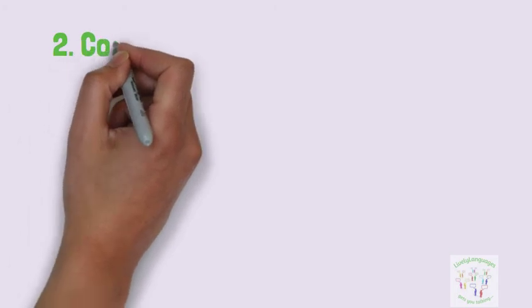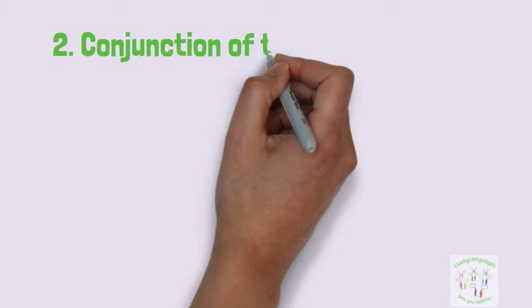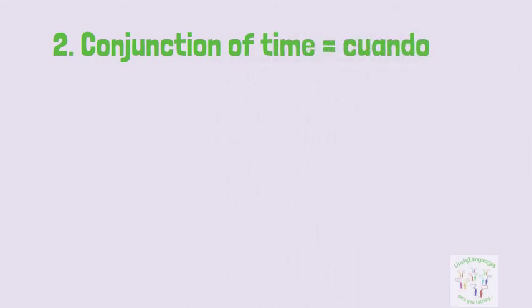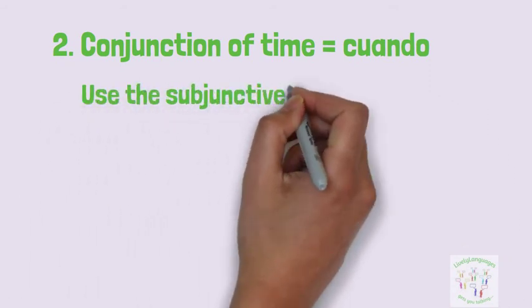Secondly, cuando can also be used as a conjunction of time. A conjunction introduces a clause, like a mini sentence. Cuando introduces something that hasn't yet happened and so the verb needs to be in the subjunctive.